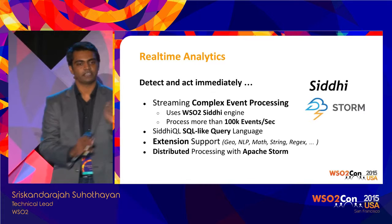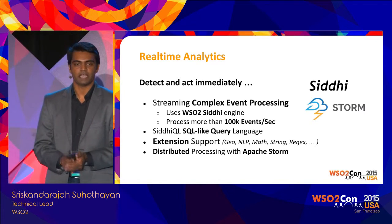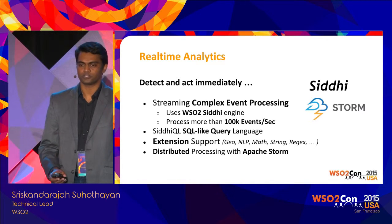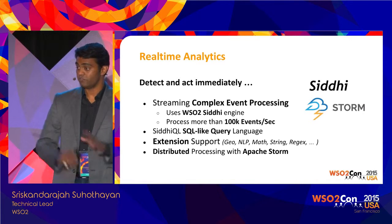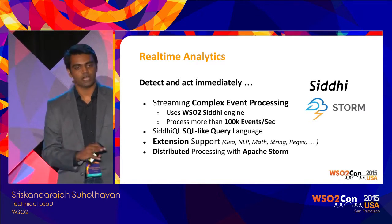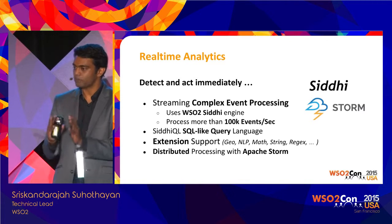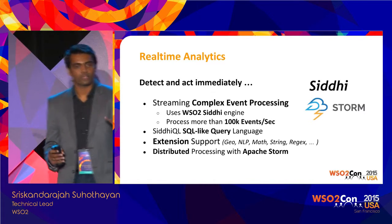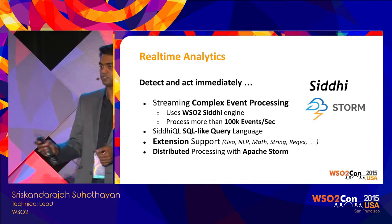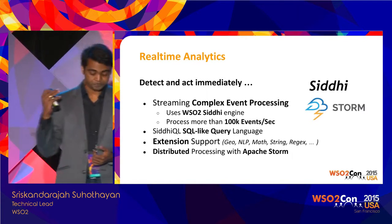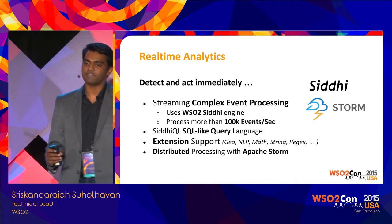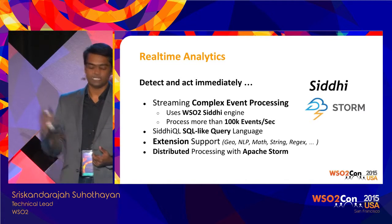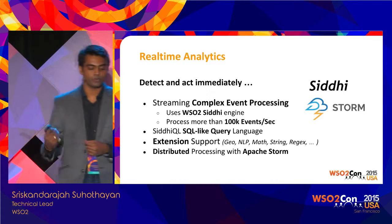For example, consider a simple credit card fraud case: somebody steals your credit card, goes to a grocery store to test it with a small purchase, then makes a huge purchase and discards the card. A small transaction followed by a huge transaction within a day may indicate fraud, and the bank calls to verify. This is identifying a pattern over time — these kinds of operations cannot be done using micro-batches; they require a streaming analytics solution where you detect and act immediately.